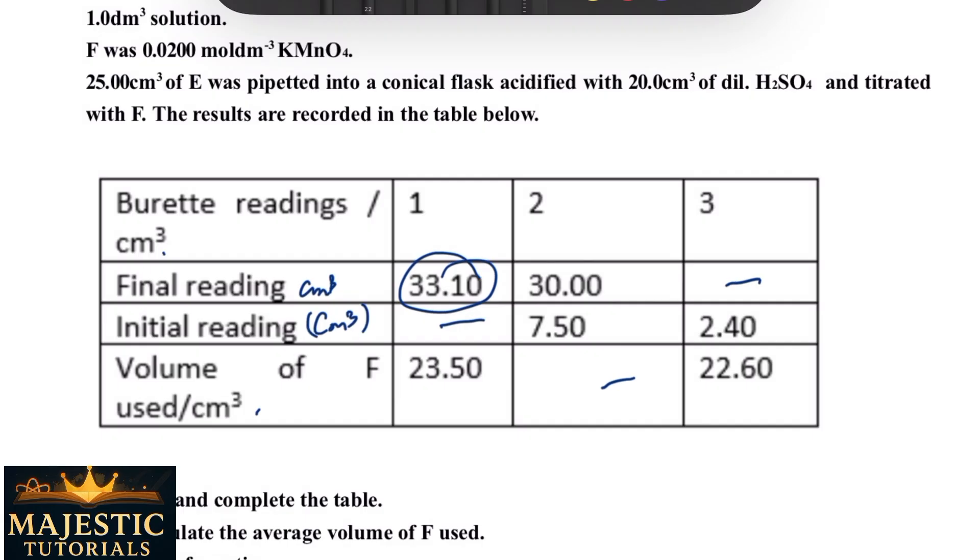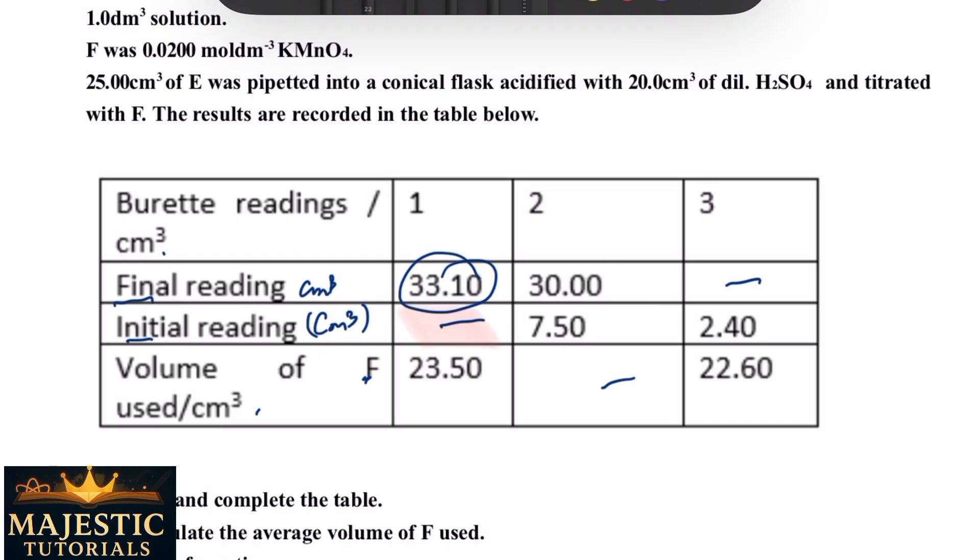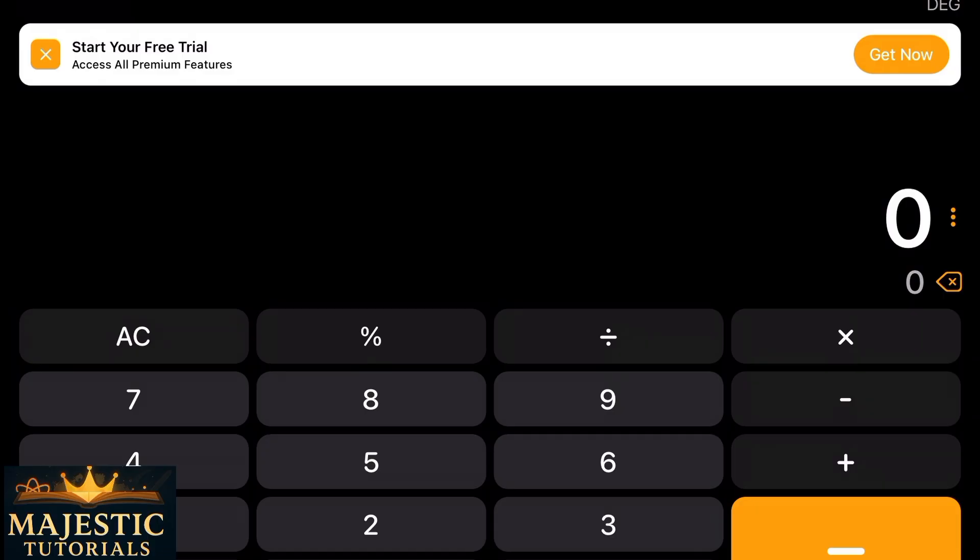So this is fine. Now this is initial, so how do you now get the volume of F used? To get what should be here we need to minus. Exactly - 33.10 minus 23.50 - whatever it gives us is the answer. Of course, so to find what should be here mathematically, simply that's 33.10 minus 23.50.